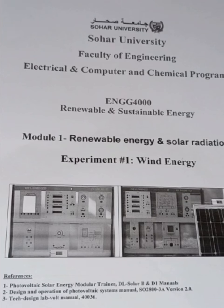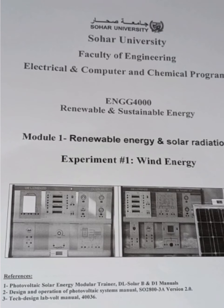In this experiment we consider three different conditions. The first condition involves three different distances between the fan and wind turbine: 20, 40, and 60 centimeters. Then we consider three different fan speeds: low, medium, and high. Finally, we consider four different blade angles of the turbine: 0, 30, 60, and 90 degrees.